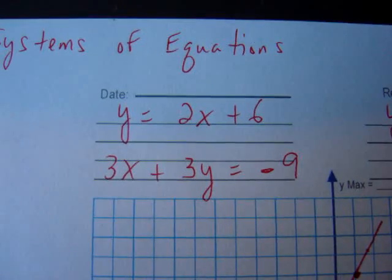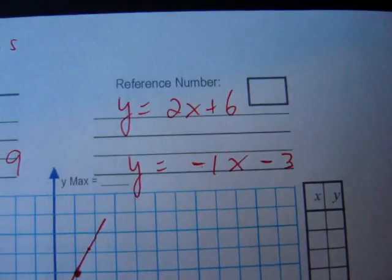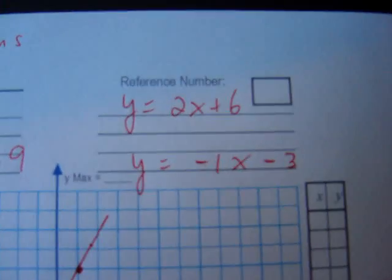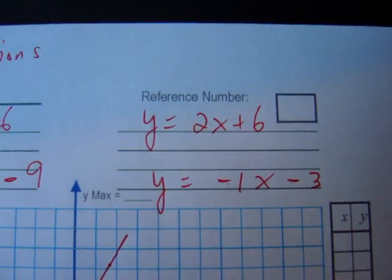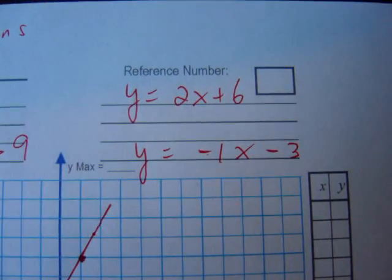Well, since we're pretty good at this, we know how to solve for y. Once you do so, you end up with y equals negative 1x minus 3. So again, here's our system. Both equations are in slope-intercept. We have y equals 2x plus 6, and y equals negative 1x minus 3.